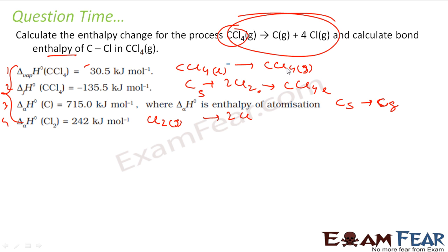I will take CCl4 has to be gas, right? So I will take this reaction, the first one, and flip it. So I will write CCl4 in gas gives CCl4 in liquid, and delta H here is minus 30.5.